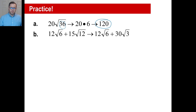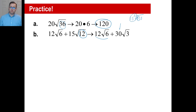Practice problem B: 3√2 times (4√3 + 5√4). This gives 12√6 plus 15√12. The √12 breaks down into √(4×3), and √4 is 2, so 15 times 2 is 30, leaving 30√3. The final answer is 12√6 + 30√3.